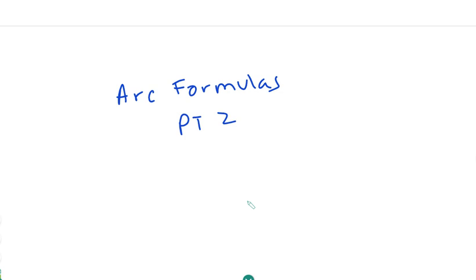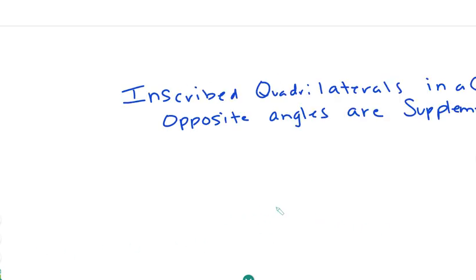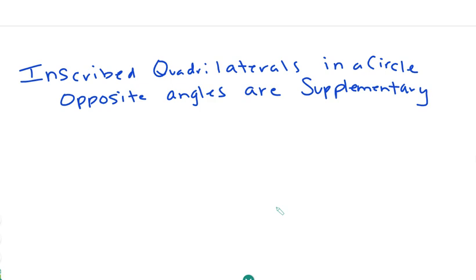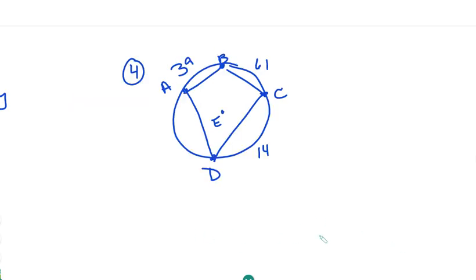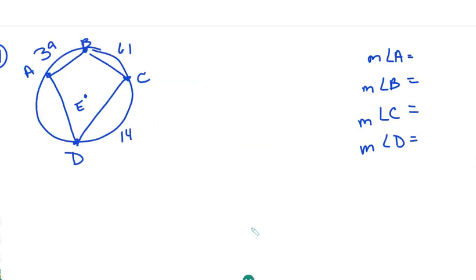Arc Formulas, Part 2. We're going to be looking at inscribed quadrilaterals — those are quadrilaterals that are drawn inside a circle. The opposite angles are going to be supplementary. So here we have quadrilateral ABCD, which is inscribed in circle D.